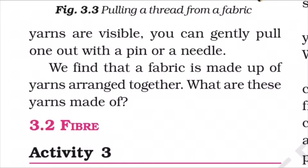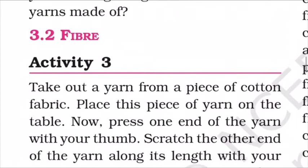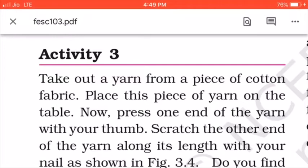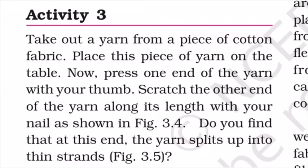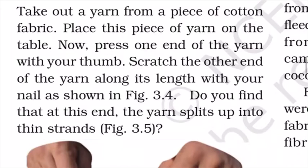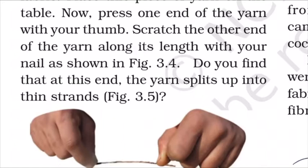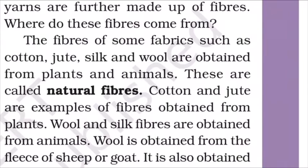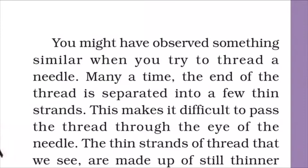We have seen that yarns arranged together make a fabric. But what are these yarns made of? Activity Three: Take out a yarn from a piece of cotton fabric. Place this piece of yarn on the table. Now press one end of the yarn with your thumb and scratch the other end along its length with your nail, as shown in figure 3.4. Do you find that at this end the yarn splits up into thin strands?